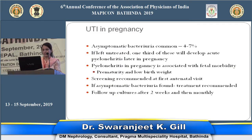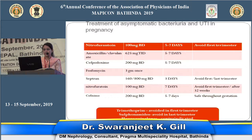A few words about UTI in pregnancy: asymptomatic bacteriuria is very common and if left untreated may lead to pyelonephritis, which is associated with significant fetal morbidity including low birth weight. All pregnant patients should be screened for bacteriuria at their first antenatal visit, and if asymptomatic bacteriuria is found, it should be treated. Drugs considered safe in pregnancy include nitrofurantoin, penicillins like amoxicillin, cephalosporins like cefpodoxime and cephalexin, and Septran. Nitrofurantoin and Septran should not be used in the first and last trimester, while penicillins and cephalosporins are safe throughout pregnancy.